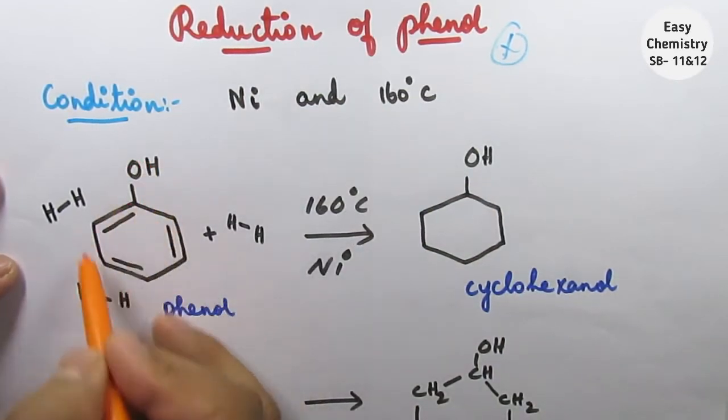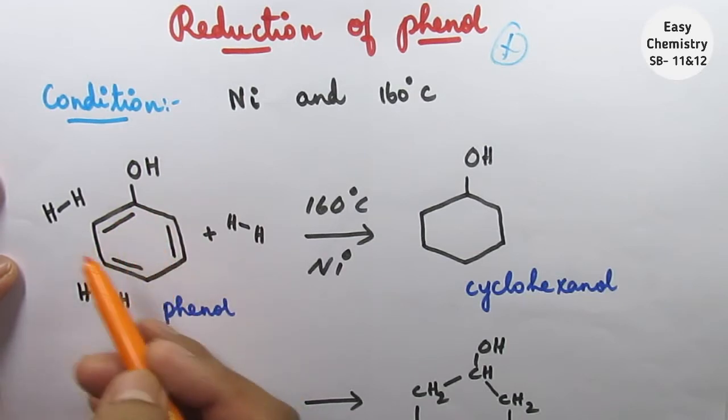Phenol is attached to a benzene ring. The benzene ring has three alternating double bonds.